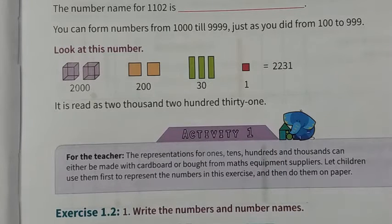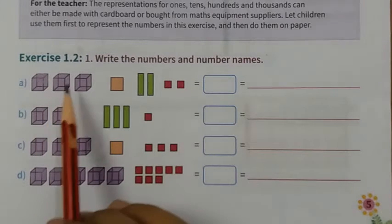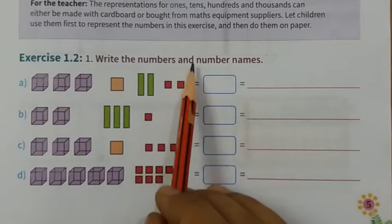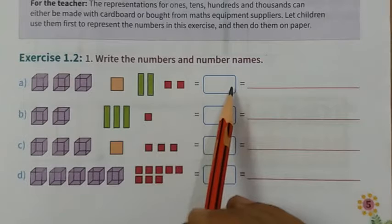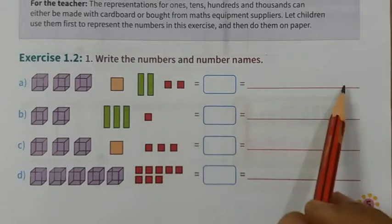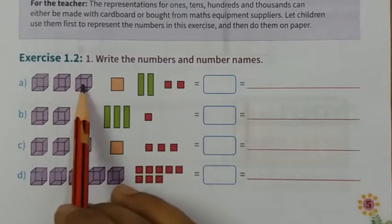Now start exercise 1.2, page number 5. Everyone open page number 5. Write the numbers and number names. What do we need to do? Which number will come here? We have to write the name. One, two, three, so 3000.